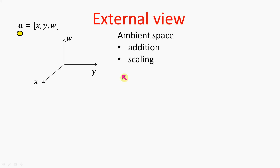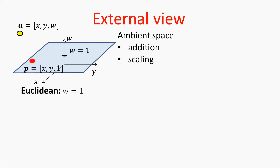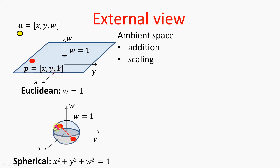Different geometries are embedded in this ambient space. For example, the two-dimensional Euclidean geometry is a plane in this three-dimensional ambient space defined by the equation W equals 1. So a point is a member of this geometry if its coordinates are x, y, where x and y can take arbitrary values, but the third extra coordinate must be equal to 1. In order to describe spherical geometry, the spherical geometry is embedded into this ambient space as a unit sphere, defined by an equation that is the square of the distance of a point from the ambient origin, equal to 1.